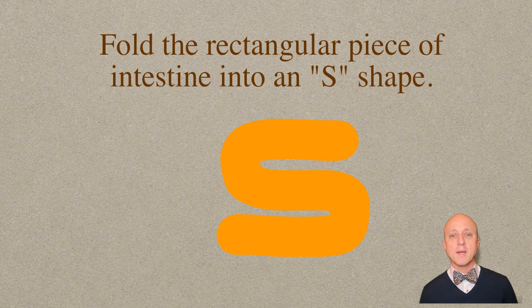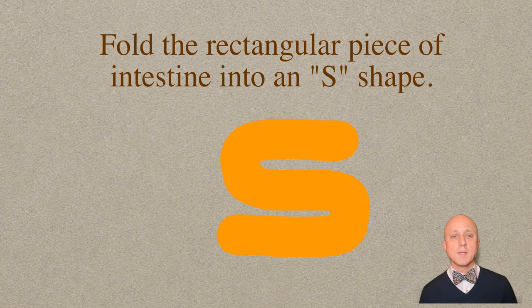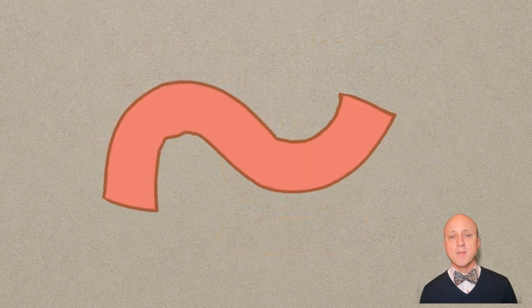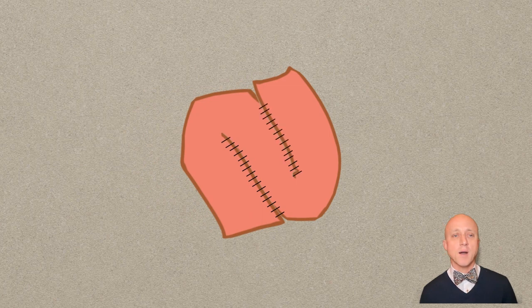So, in order to make an effective augment, we need to fold the rectangular piece of intestine into an S shape. Then, we sew the edges of that S to create a square patch of intestine to serve as our augment.